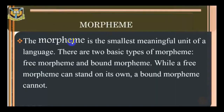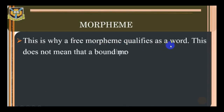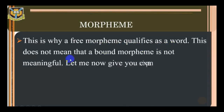The morpheme is the smallest meaningful unit of a language. There are two basic types of morpheme: the free morpheme and the bound morpheme. While a free morpheme can stand on its own, a bound morpheme cannot. This is why a free morpheme qualifies as a word. It does not mean that a bound morpheme is not meaningful.